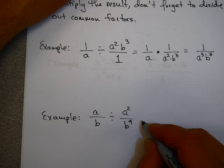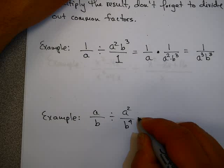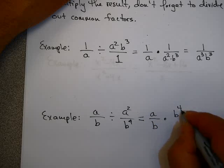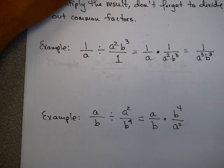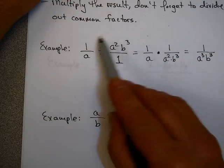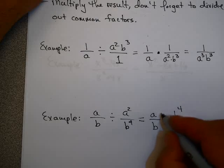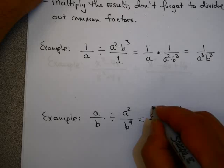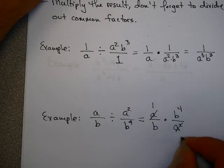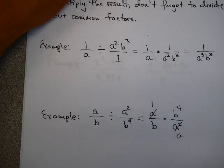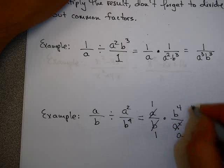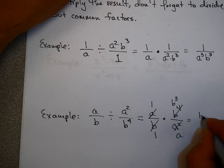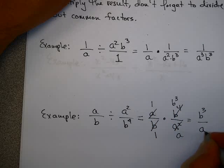See if you can try this one on your own. First, I'm going to change division to multiplication by the reciprocal. Since a and a squared are all factors, not terms: a goes into a once and into a squared a times. And b goes into b once, and b to the fourth b cubed times. I have 1 times b cubed, which is b cubed, and 1 times a, which is a.